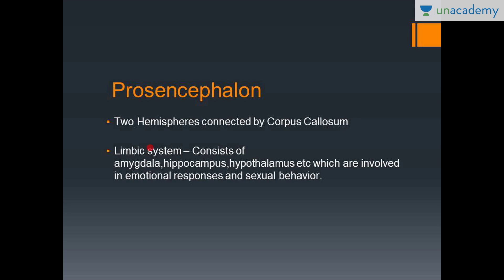The prosencephalon — the cerebrum has two hemispheres connected by the corpus callosum. The two halves of the brain need to communicate, and the corpus callosum is the mode of communication. The cerebrum of the prosencephalon also has a limbic system, which is associated with your emotions — anger, happiness, sadness, everything.